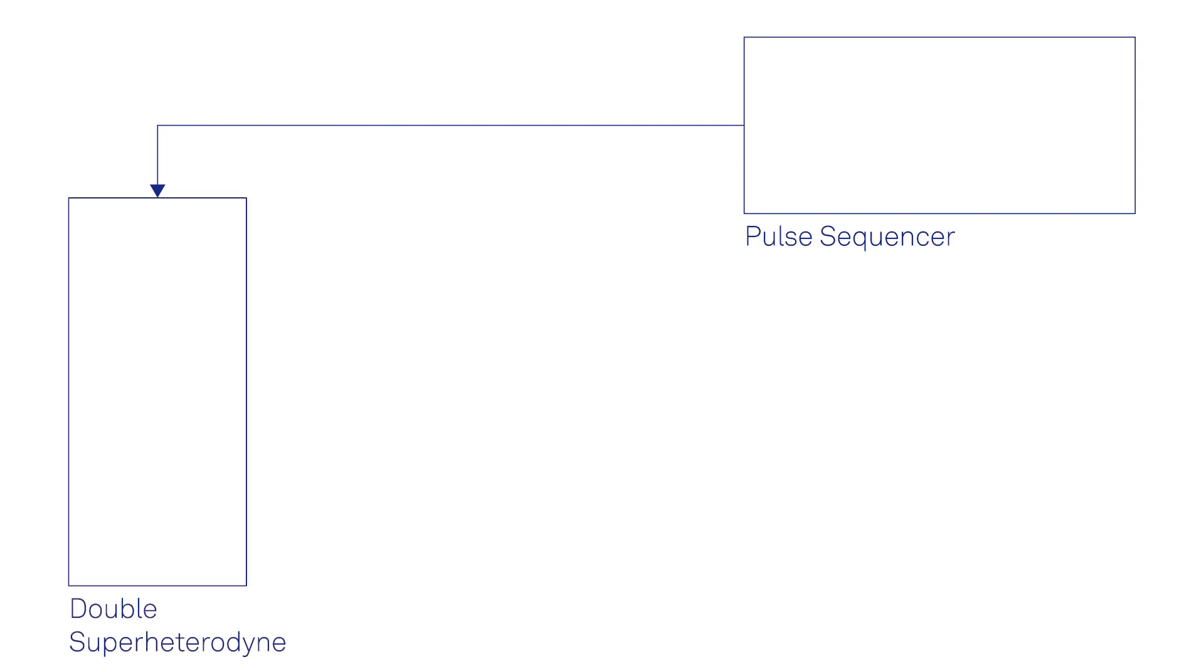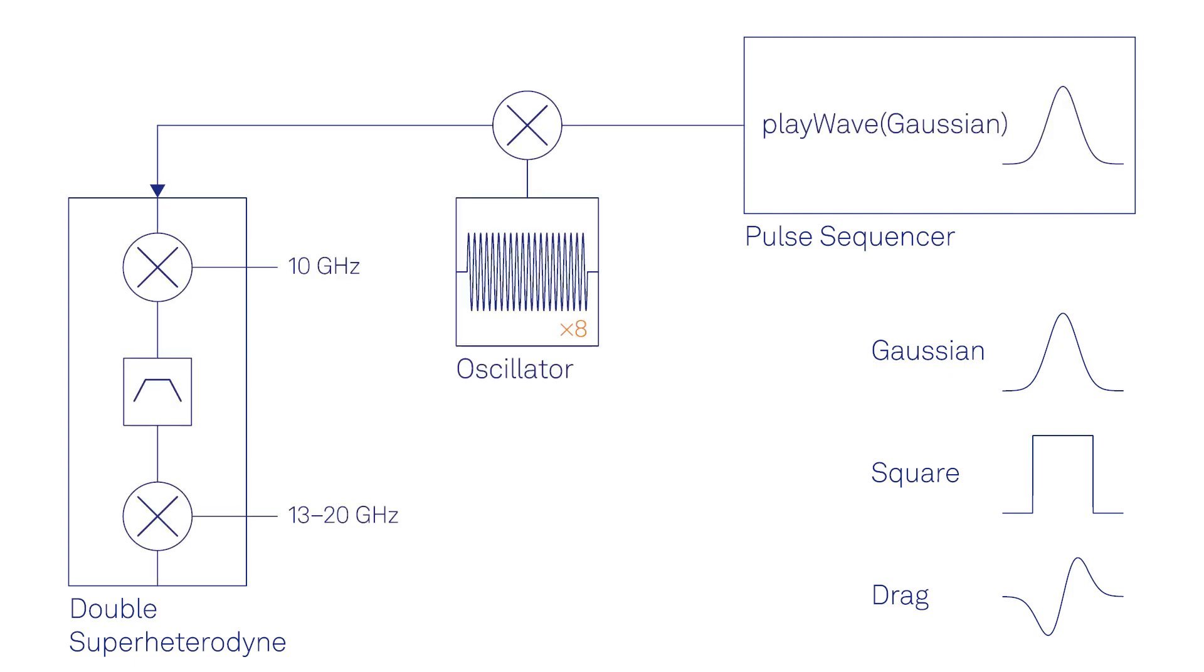Each channel also has its own AWG core that allows you to define pulse envelopes sample by sample at 2 Giga samples per second and with a 14-bit vertical resolution. With our pulse level sequencing, you can choose in real-time which complex-valued waveform is played in the gate sequence and with which frequency.